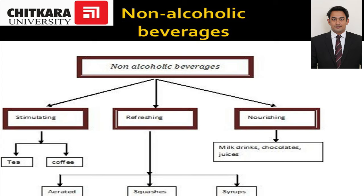The second category is refreshing beverages, which quench thirst. These include aerated beverages — beverages which contain carbon dioxide — as well as squashes, which are made with fruit pulp, and syrups, which are also made with fruit pulp but contain more sugar.